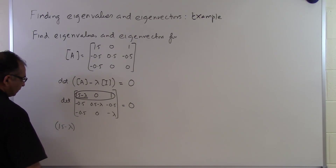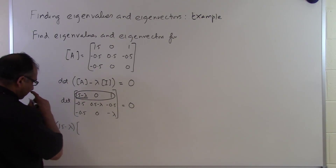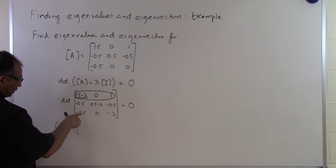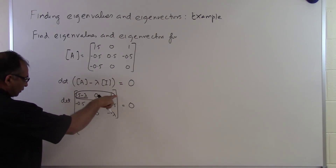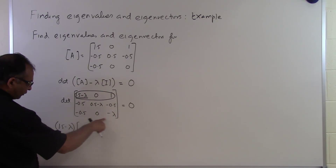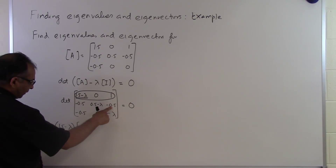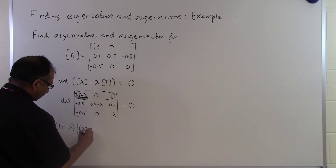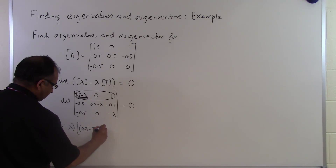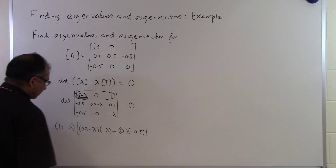Since it's first row, first column, the index is 1 plus 1 equals 2, which is even, so it will be positive. Then it's the determinant of the matrix left over once I remove the first row and first column — that 2 by 2 submatrix. The determinant of that 2 by 2 is: 0.5 minus lambda times minus lambda, minus 0 times minus 0.5.